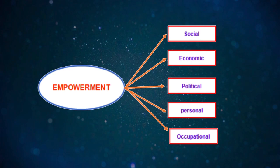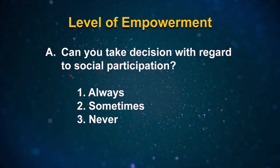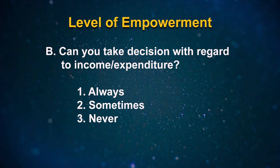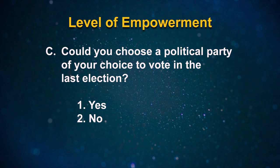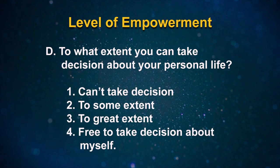A figure depicts some of the indicators of empowerment: social empowerment, economic empowerment, political empowerment, personal empowerment, and occupational empowerment. To know the level of empowerment, we might ask: Can you take decisions with regard to social participation? Options: always, sometimes, never. Can you take decisions with regard to income and expenditure? Always, sometimes, never. Did you choose a political party or were you able to vote in the last election? Yes or no. To what extent can you take decisions about your personal life? Options: can't take decision, to a certain extent, to a great extent, or free to take decision about myself.